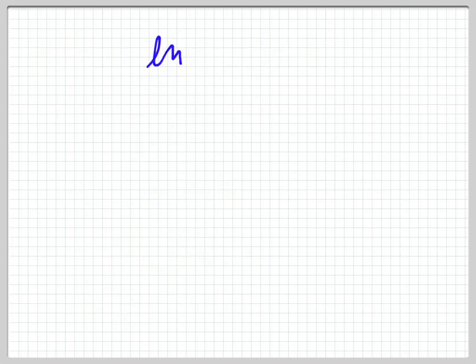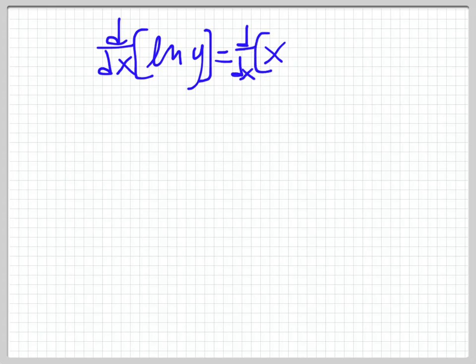So now we have ln of y is equal to x. So I'm going to take the derivative of both sides of that. d over dx of ln of y and d over dx of x. So the derivative of ln of x, that's an implicit derivative. So the derivative of ln of y is 1 over y. And don't forget, you have to use the chain rule. You always got to have that y prime there like that. And then d over dx, the derivative of x is 1.